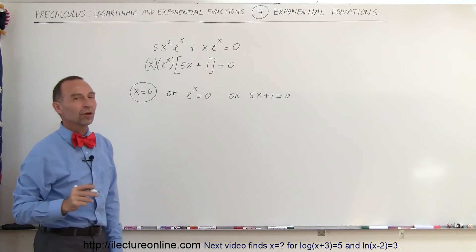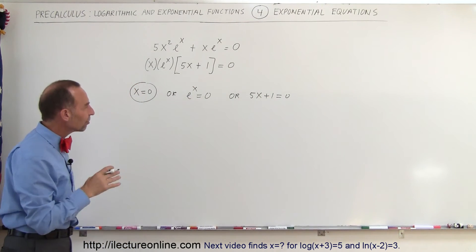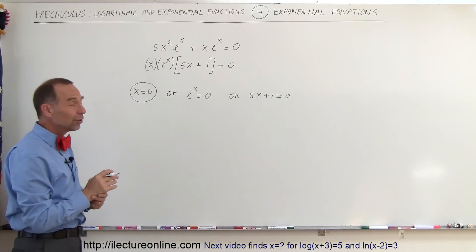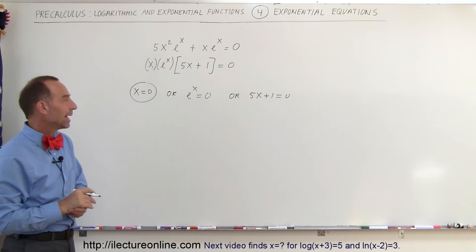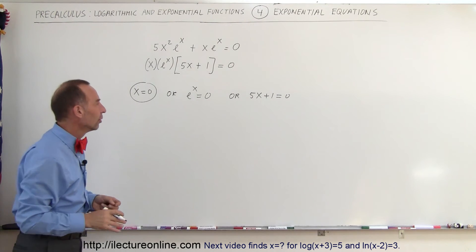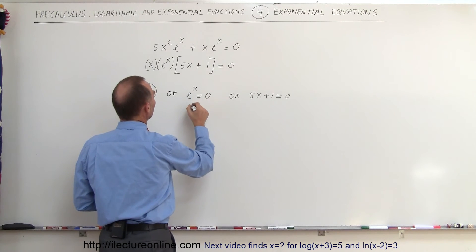Now e to the x equals 0. Is there any exponent that x can be to make e to the x equal to 0? And the answer is yes you can do that if it's minus infinity. Anything other than minus infinity, e to the x can never equal 0. So therefore this offers no solution.